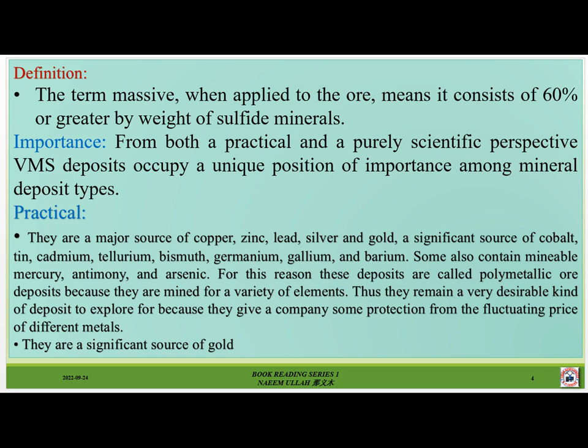Importance: from both a practical and a purely scientific perspective, VMS deposits occupy a unique position of importance among mineral deposit types. Practically, they are a major source of copper, zinc, lead, silver, and gold, and a significant source of cobalt, cadmium, tellurium, bismuth, germanium, gallium, and barium. Some also contain mercury, antimony, and arsenic. For this reason these deposits are called polymetallic ore deposits.